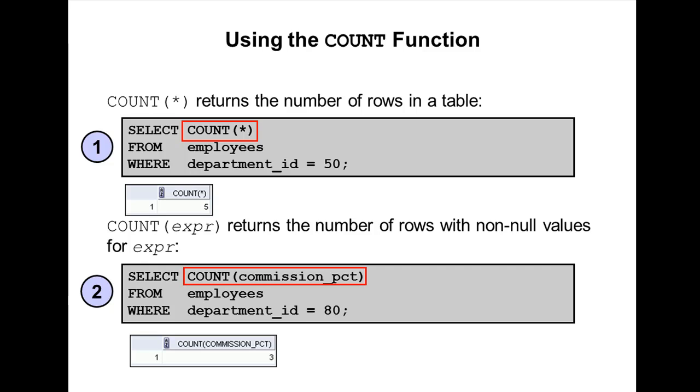If a WHERE clause is included in the SELECT statement, the COUNT star returns the number of rows that satisfy the condition in the WHERE clause. If you see in this slide, SELECT COUNT star FROM employees WHERE department underscore ID equals 50, this displays the number of employees in department 50.